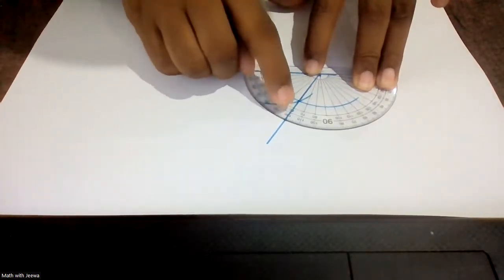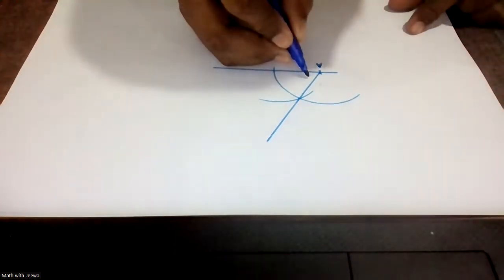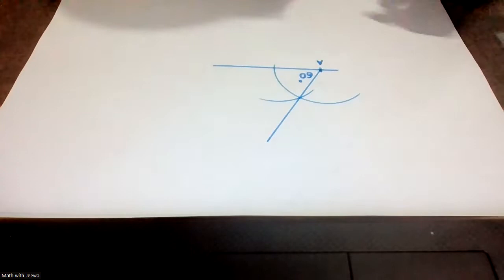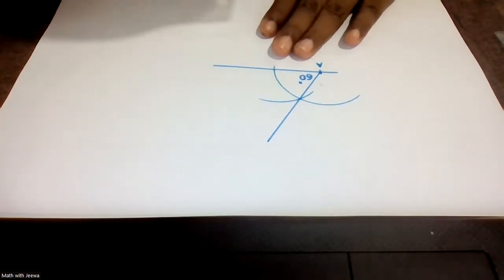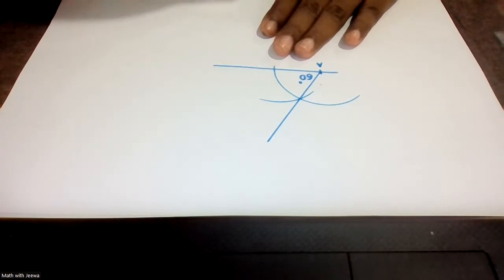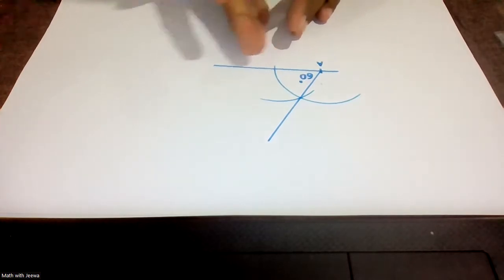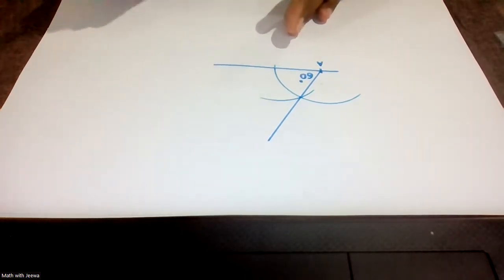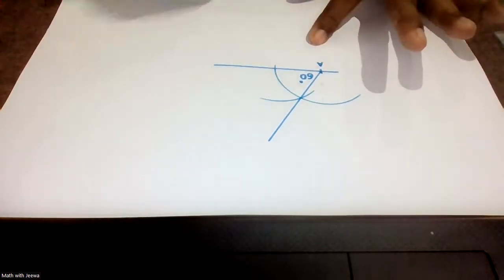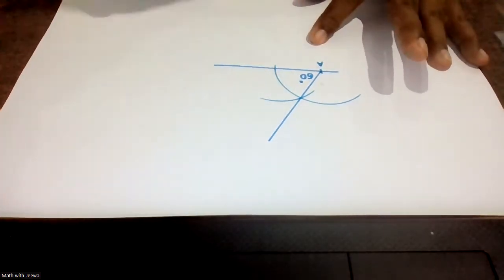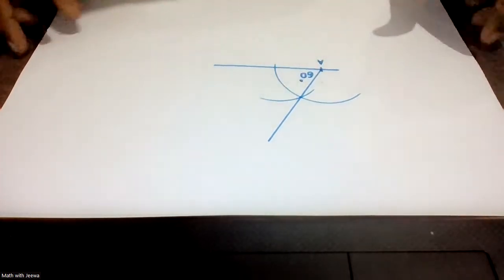You can see it is 60 degrees. So you write this as 60 degrees. This is how you construct the angle of 60. If you didn't get the steps properly, you can pause the video and replay all the steps and do it along with me.